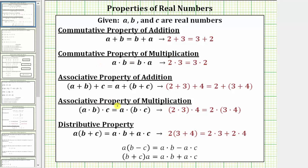The associative property of multiplication is given as the quantity a times b times c equals a times the quantity b times c. When we change the parentheses or grouping symbols within a product, we are using the associative property of multiplication.